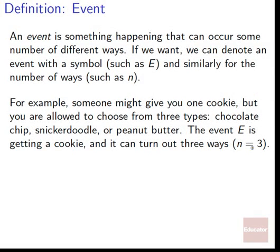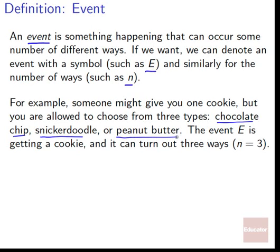First, we're going to define the idea of an event. An event is simply something happening, and it can occur in some number of different ways. We can denote an event with a symbol such as capital E, and we can denote the number of ways it can occur with some n. For example, someone might give you a cookie and you're allowed to choose from three types: chocolate chip, snickerdoodle, or peanut butter. The event E is getting a cookie, and it can turn out three different ways — the chocolate chip version, the snickerdoodle version, or the peanut butter version — but they're all within the event of getting a cookie.